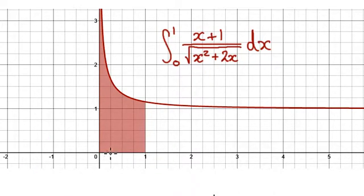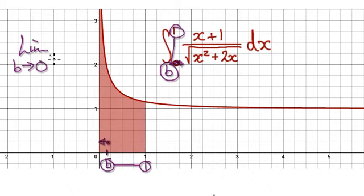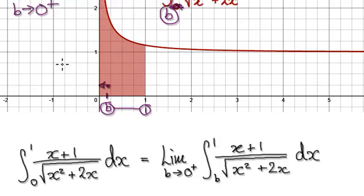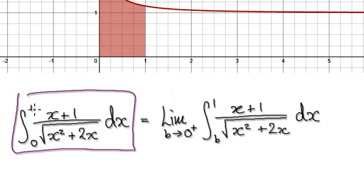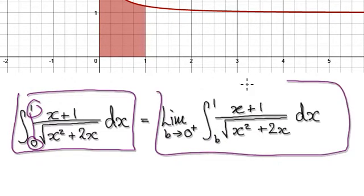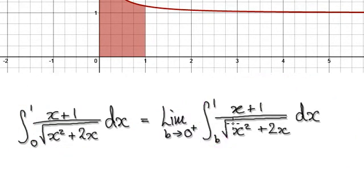To do this, our normal routine has always been to integrate it from an arbitrary point B to 1, and then later allow B to head towards 0 from the right-hand side. So we can say the area from 0 to 1 is equal to this whole thing here — we've got to take the limit of this as B heads towards 0 from the right-hand side.